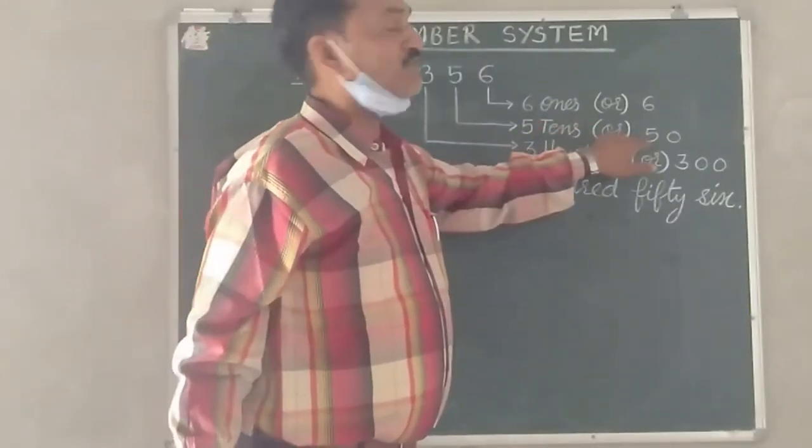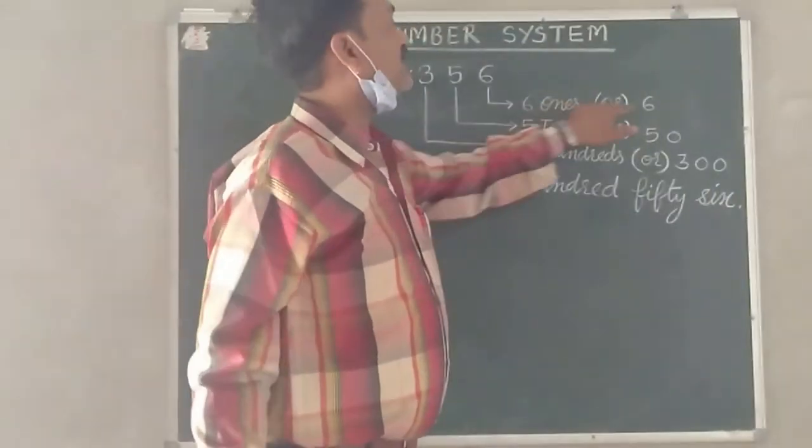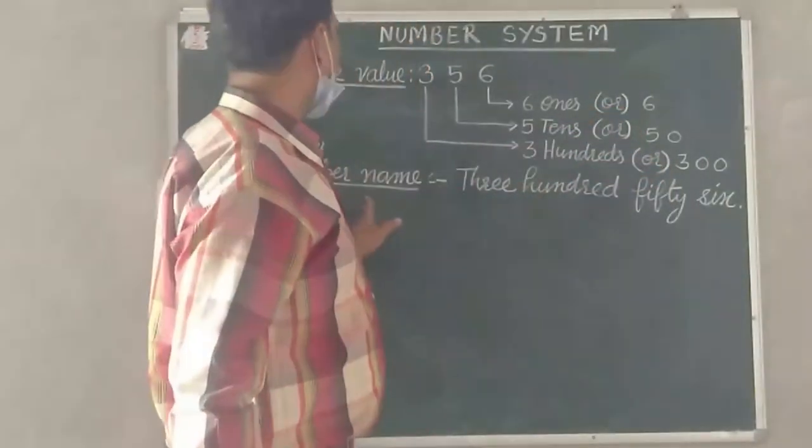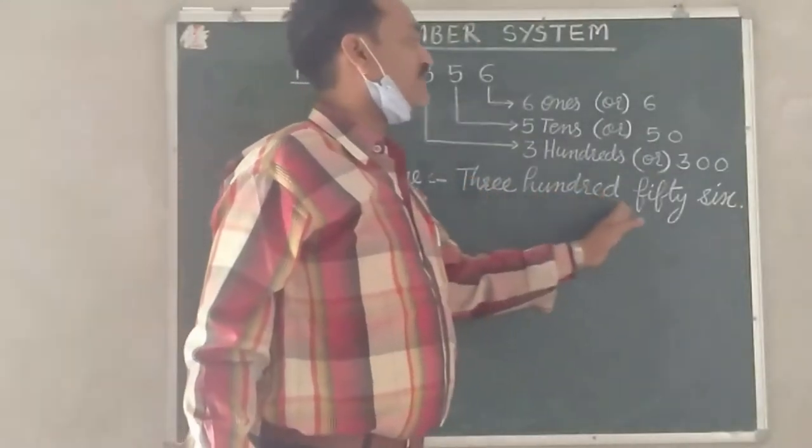5 tens equal 50, 6 ones equal 6. So here 356, this number has become 356.